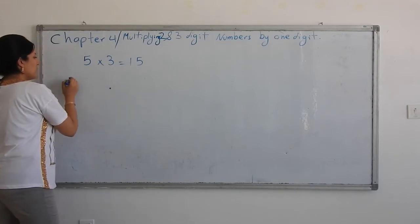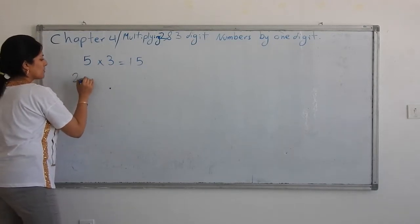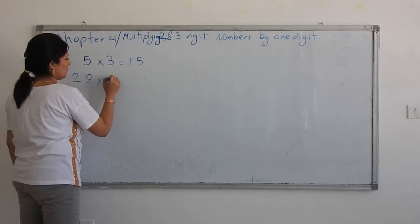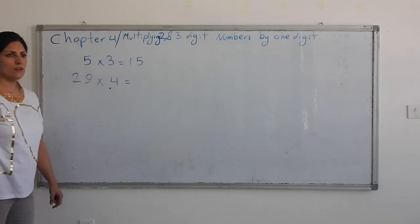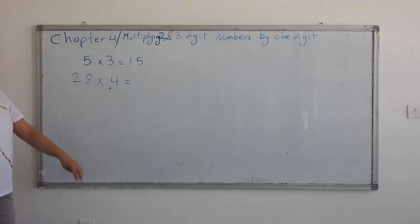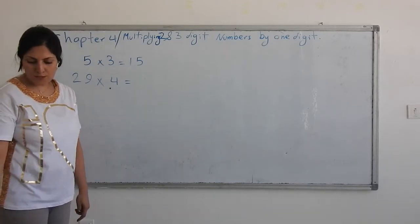But now, for example, how about this? 29 times 4. How we can calculate it and what's the product?